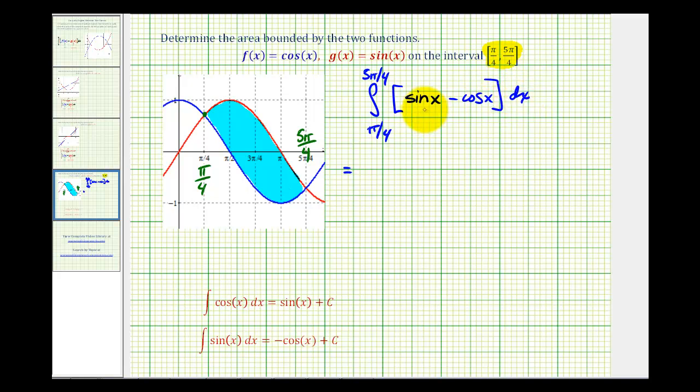So the antiderivative of sine x would be negative cosine x minus the antiderivative of cosine x is sine x and we'll evaluate this at five pi over four and then pi over four and determine the difference. Now we're going to replace x with five pi over four.